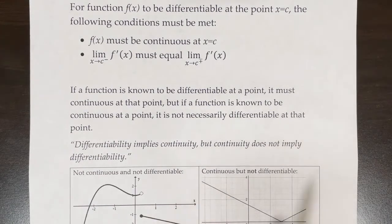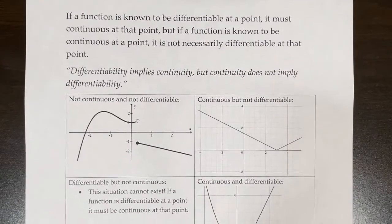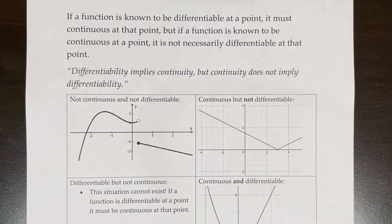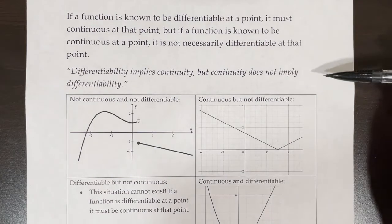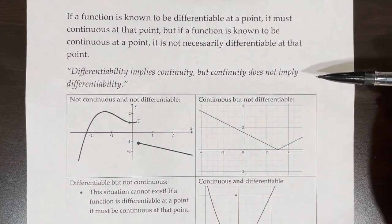If a function is known to be differentiable at a point, it must be continuous at that point. But if it's known to be continuous at a point, it is not necessarily differentiable at that point. The way that we say that is that differentiability implies continuity, but continuity does not imply differentiability.